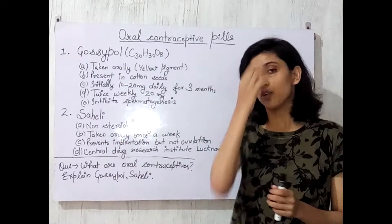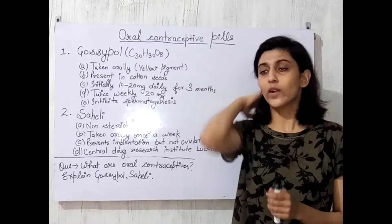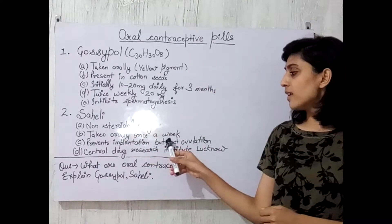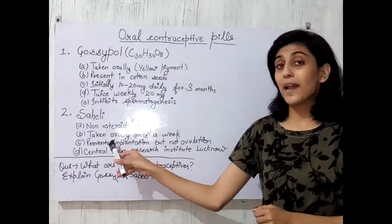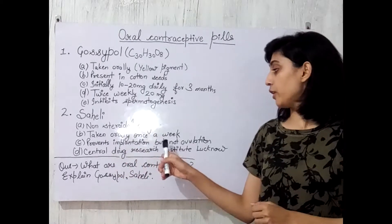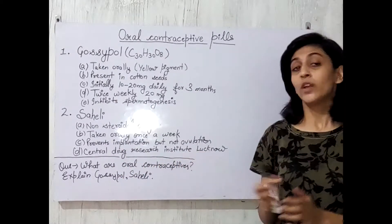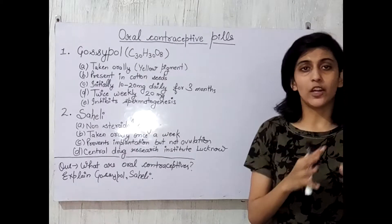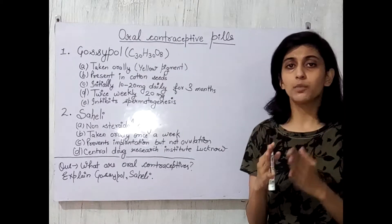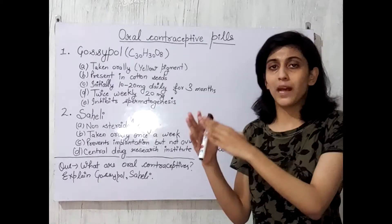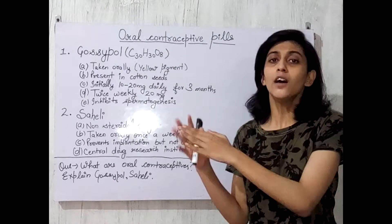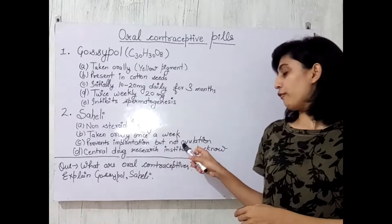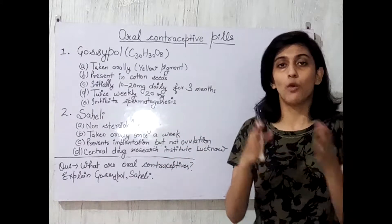Now let's come to the other one — Saheli. This is a non-steroidal drug taken only once a week. It prevents implantation but not ovulation. It prevents the attachment of the blastocyst to the uterine wall, but it does not affect ovulation.